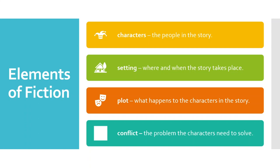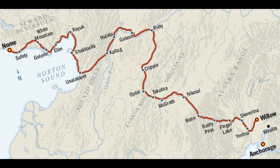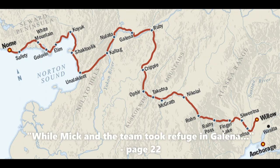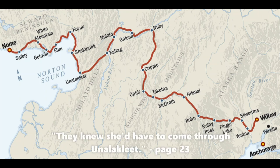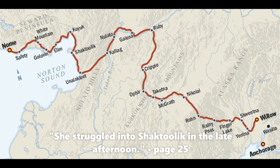Setting is where and when the story takes place. We said last time that the setting of the story was Alaska, but can we be more specific? Robert J. Blake uses the actual Iditarod checkpoints to show how the setting changes throughout the story. Can you see them on this map? It's almost like he uses the setting to contribute to the plot, because it adds suspense when we see how Mick and Akiak are getting closer and closer to the finish.